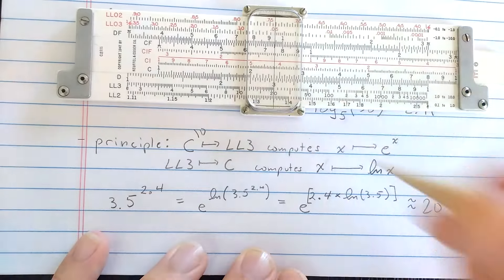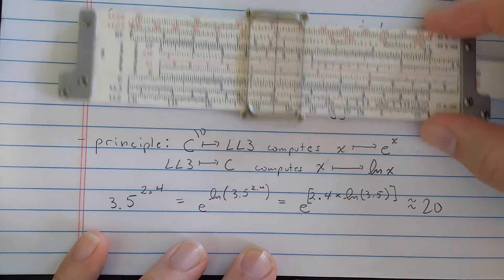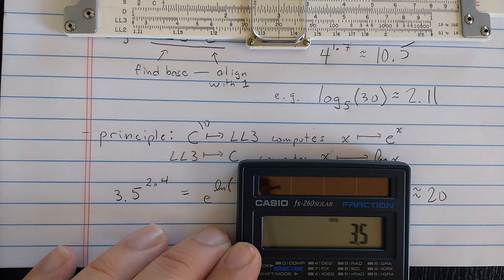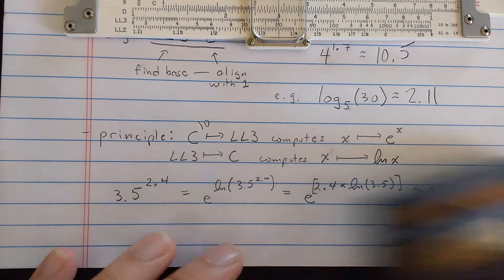Let's see, let's check that on the calculator. So here, 3.5 to the 2.4. Okay, about 20. All right.